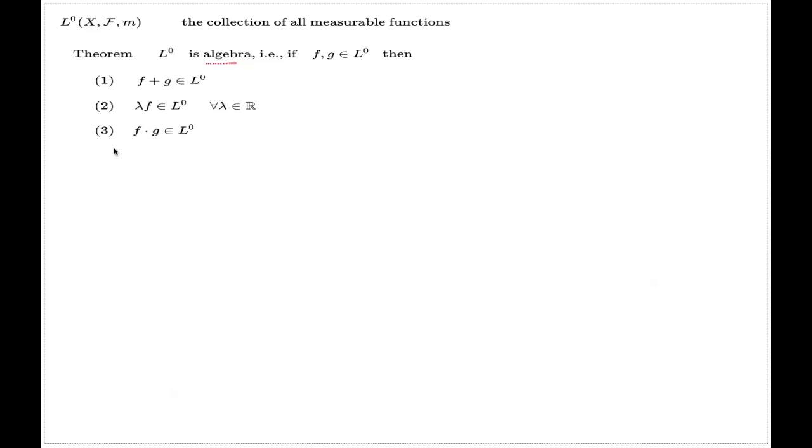But the theorem actually has a fourth part which also says that if I have a sequence of measurable functions such that the pointwise limit of these functions exists, if you have a pointwise limit in every point of your universal set X, then the limit, this pointwise limit, will also be measurable.